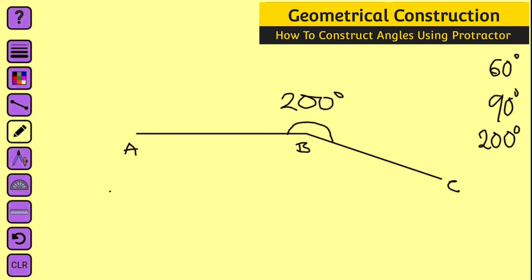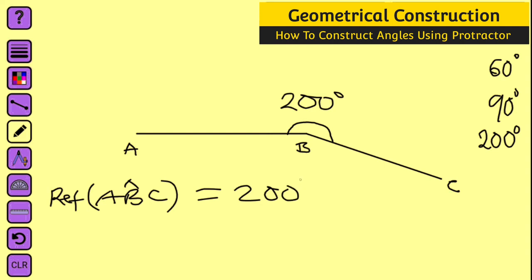This angle right here is 200 degrees. Let me call this point C, therefore reflex angle ABC is equal to 200 degrees. If you say angle ABC you are referring to the inner angle, but we just constructed the external angle which is reflex to angle ABC. And this is exactly how to construct angles using a protractor — thank you for watching, do have a nice day.